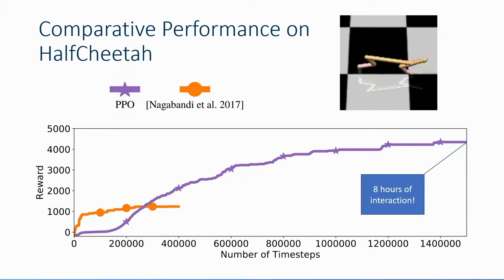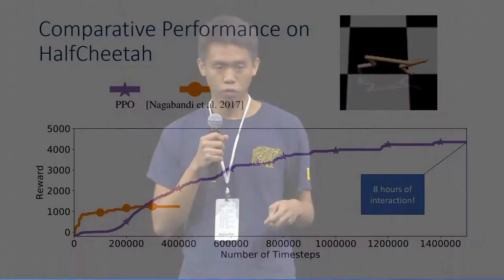This raises the question: how could we improve model-based RL methods while retaining the data efficiency they promise? The way we approach this problem is by considering the question of model bias. Model bias essentially boils down to the issue that when you're planning, you're forced to completely trust your model, even though you know it will probably be wrong in some part of your state space. Our work tries to modify the standard model-based RL framework in a way that accounts for this model bias.